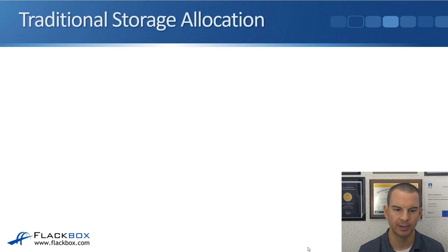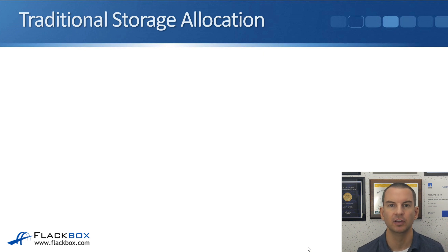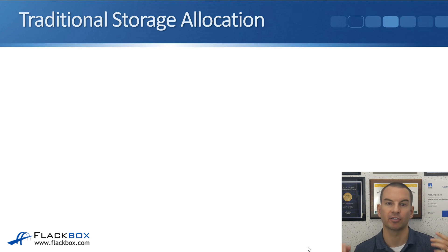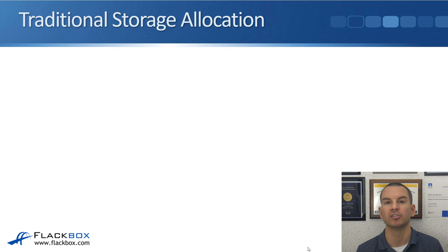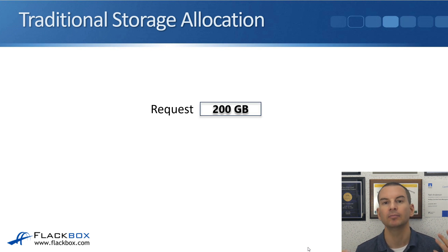Let's see how this works, looking at traditional storage allocation first. Let's say the organization you're working in does not have a centralized storage system and instead you're using disks inside the server chassis themselves. In a real world environment you'd have multiple disks in each server in a RAID configuration, but to keep things simple, let's say we're using one disk in each server. You are in charge of purchasing, and the server team come to you saying they want a new server requiring 200 gigabytes of storage space.